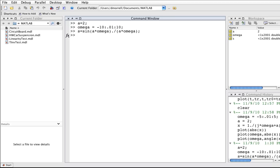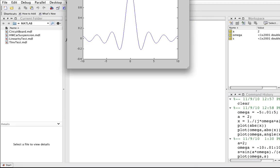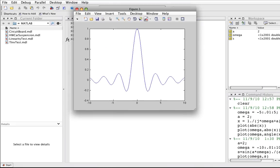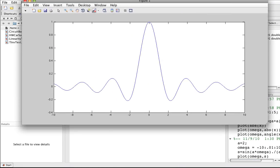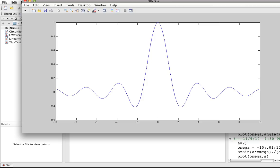So, now we should be able to plot omega and s and we get something that looks like this. Isn't that great? You'll notice that it goes up to a value of 1.